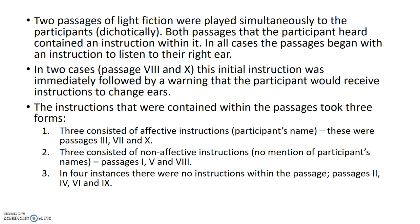Two passages of light fiction were played simultaneously to participants dichotically. Both passages contained an instruction within them. In all cases, the passages began with an instruction to listen to their right ear. In two cases — passages 8 and 10 — this initial instruction was immediately followed by a warning that the participant would receive instructions to change ears. Three passages consisted of effective instructions containing the participants' names: passages 3, 7, and 10.